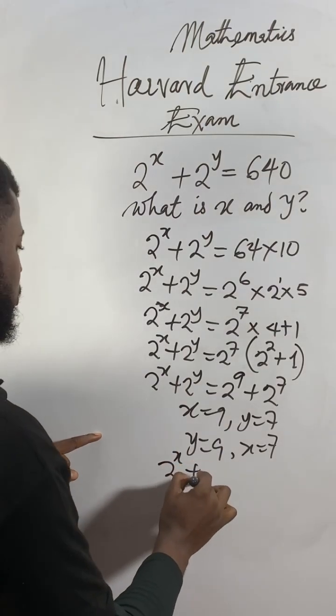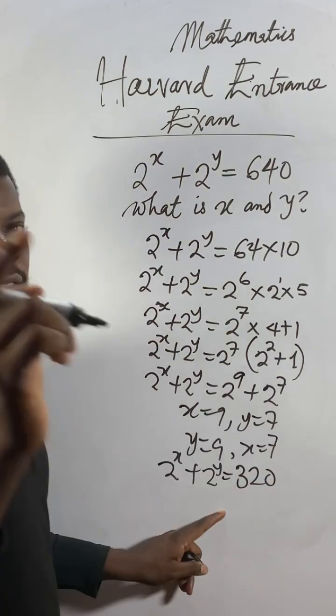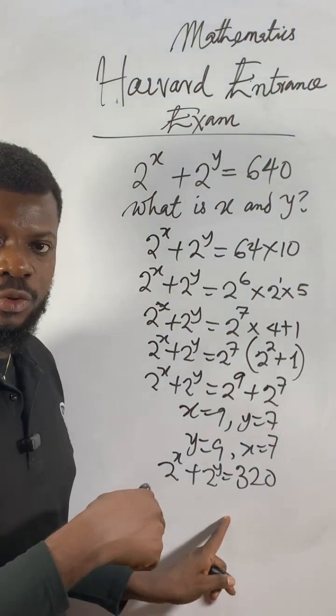But then, if I come out and do this one: 2 to the power of x plus 2 to the power of y equals 320. Try to solve this one in the comment section. So long, sure working. Okay, thank you.